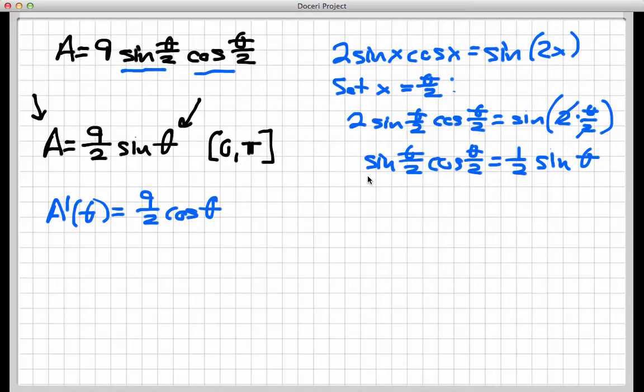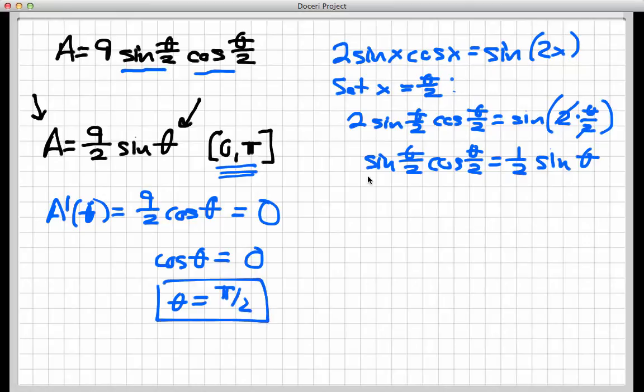Okay, so let's think about where this function has its critical values. Well, that would be where the derivative is either zero or undefined. Now, the derivative is just 9 halves cosine theta. That's defined for all values of theta. So where is this equal to zero? Well, it's where cosine of theta is equal to zero. And that happens infinitely many times, but only once inside the interval from zero to pi. And that's at theta equals pi over two. So that's the one and only critical value of my area function inside the interval.